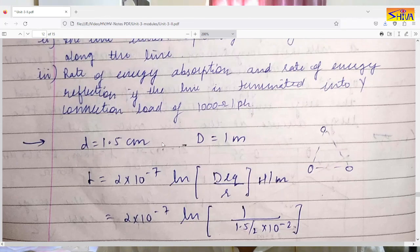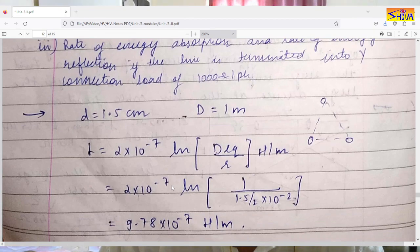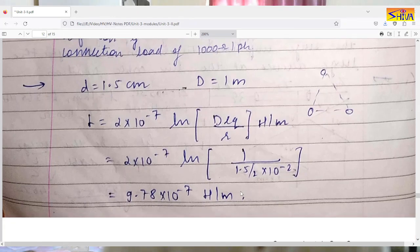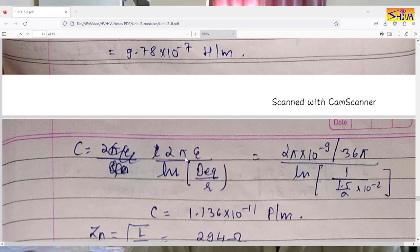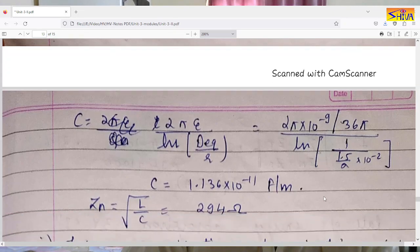For no reflection, the terminating impedance must equal the surge impedance. The surge impedance is √(L/C). Inductance: L = 2×10⁻⁷ × ln(D_eq / r) H/m. With D_eq = 1 m and r = 0.75×10⁻² m, L = 9.78×10⁻⁷ H/m. Capacitance: C = 2πε / ln(D_eq / r) = 10⁻⁹/(36π) / ln(1 / 0.75×10⁻²) F/m, giving C = 1.136×10⁻¹¹ F/m.